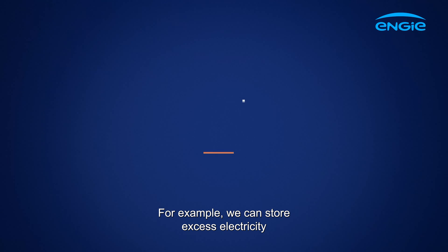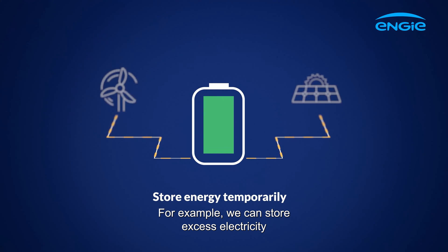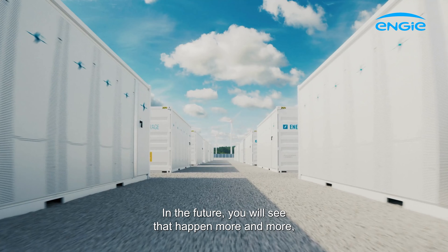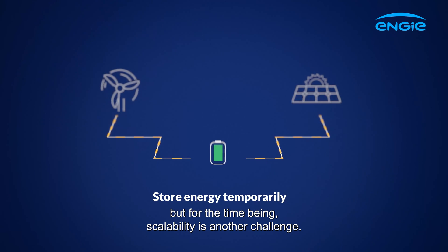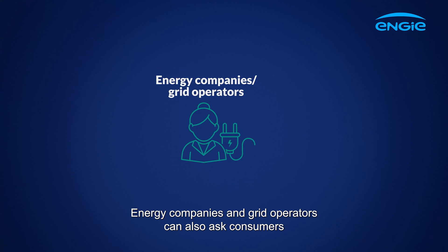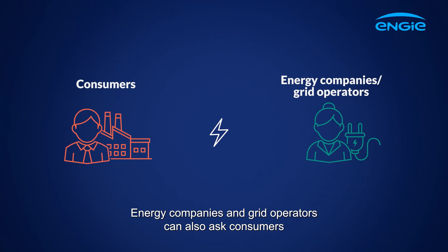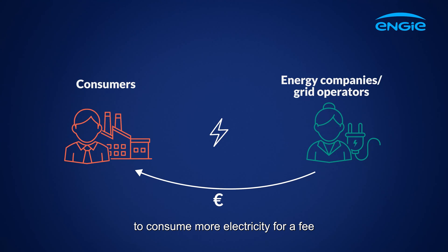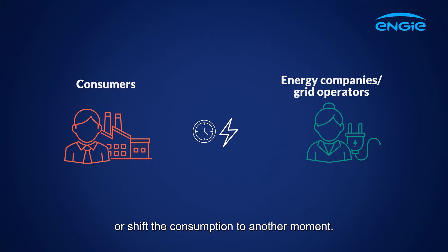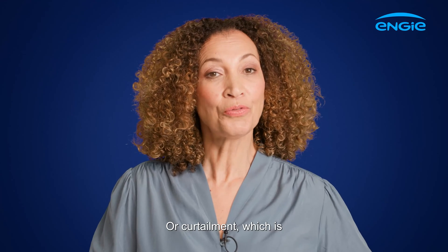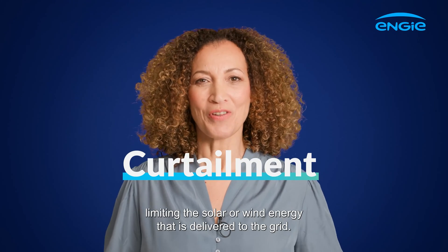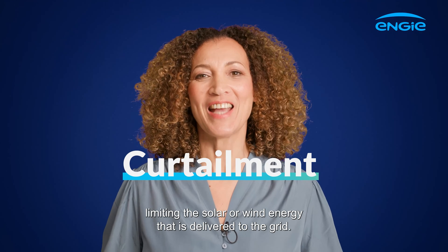For example, we can store excess electricity temporarily in batteries. In the future, you will see that happen more and more. But for the time being, scalability is another challenge. Energy companies and grid operators can also ask consumers to consume more electricity for a fee, or shift consumption to another moment. Or curtailment — which is limiting the solar or wind energy that is delivered to the grid.